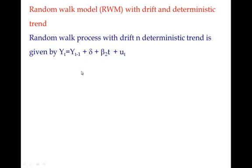Try to make it Yt minus Yt-1, let's call it Z series. This becomes δ + tβ₂ + ut.